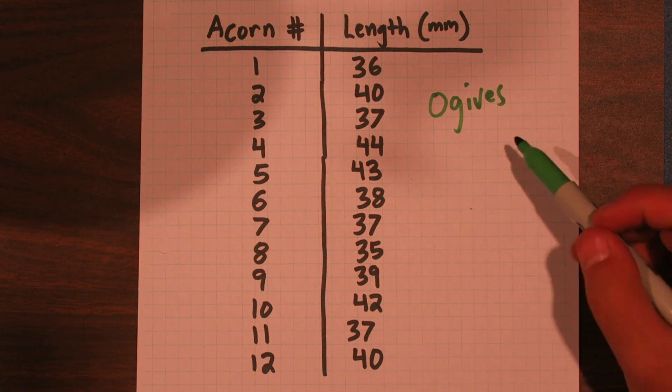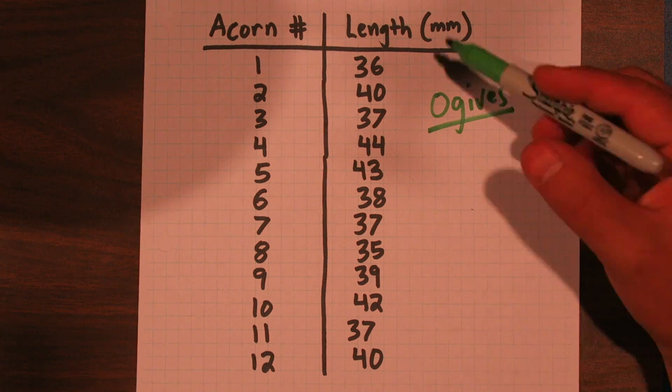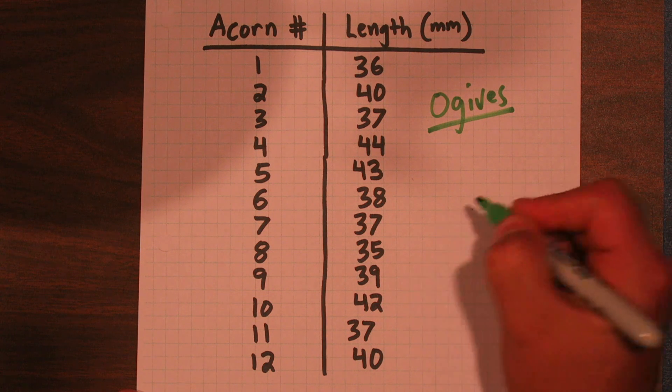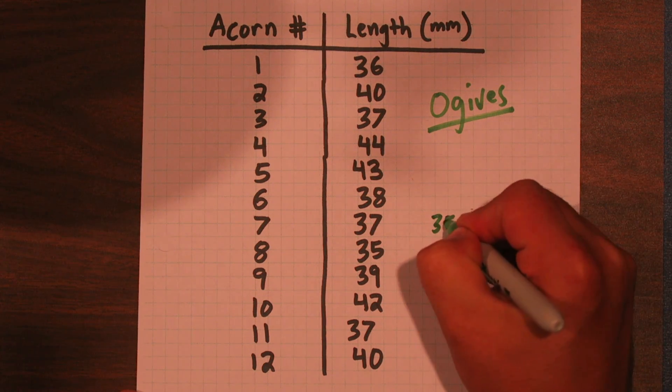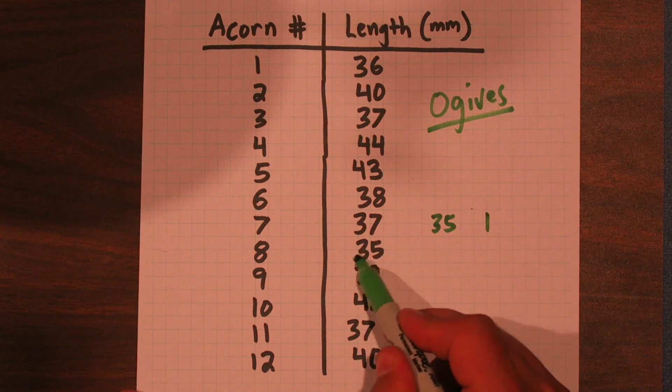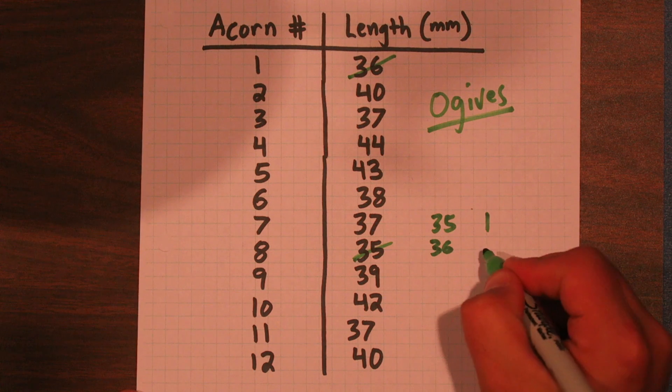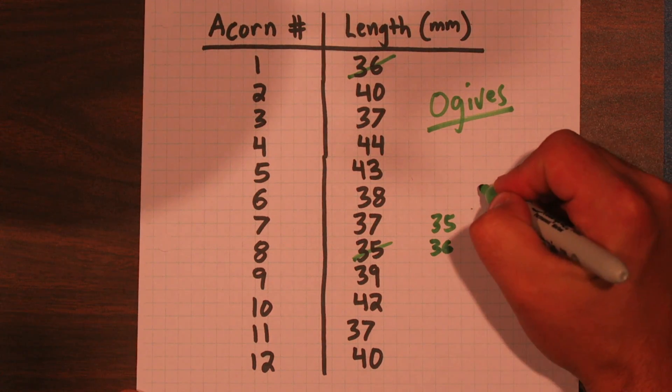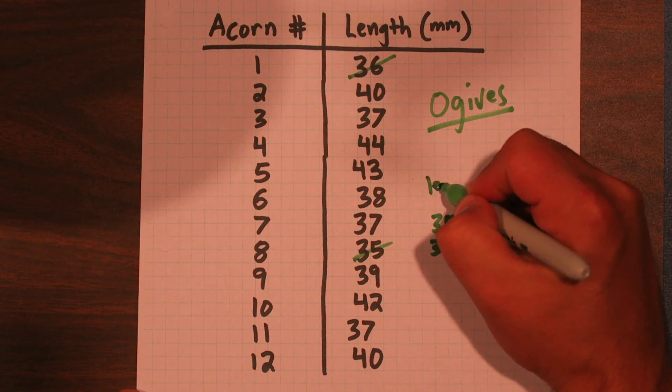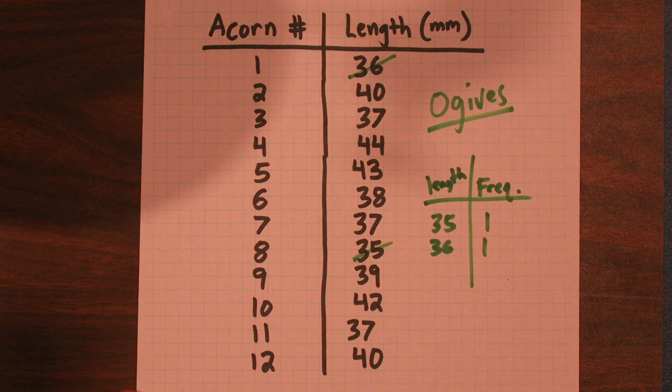First I want to talk about what ogives are and how we would make one by hand. Our smallest acorn is 35, so at 35 we have one acorn. Our second smallest acorn is 36. At 36 we have one acorn. Right now I'm making a table. This is frequency and this is length.